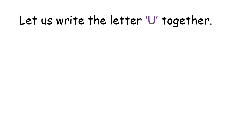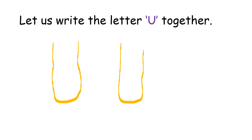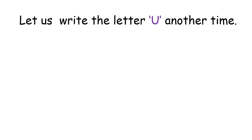Prepare a paper sheet and a pencil and let us start. Hold your pencil up, make a straight line down, and when you reach the bottom make it curve up again. One more time: straight line down, curve up. Let's practice more: make a straight line down, then a curve down, then a straight line up. This is the letter U.